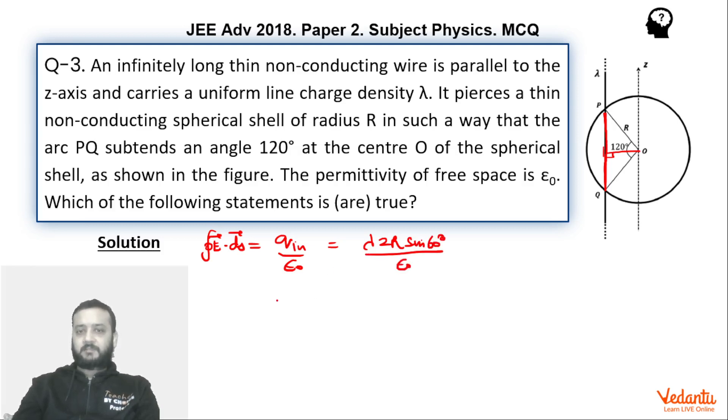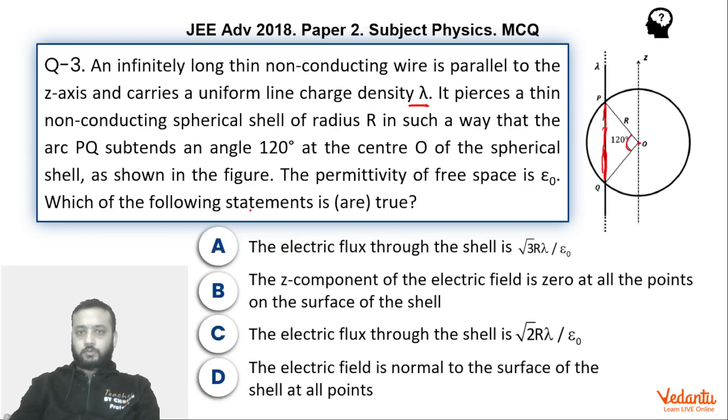This will be the flux value. So we can say that it will come out to be, sin 60 is root 3 by 2, so we can see it becomes root 3 r lambda upon epsilon naught. So basically option A is correct and option C is wrong.